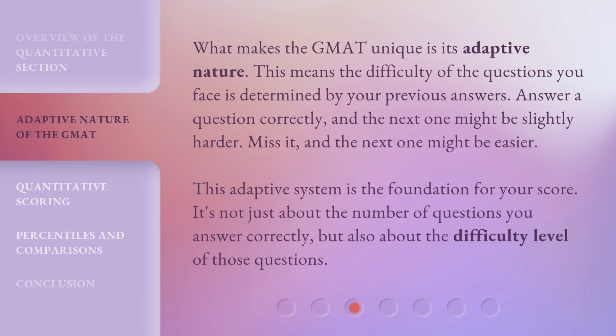What makes the GMAT unique is its adaptive nature. This means the difficulty of the questions you face is determined by your previous answers. Answer a question correctly, and the next one might be slightly harder. Miss it, and the next one might be easier.